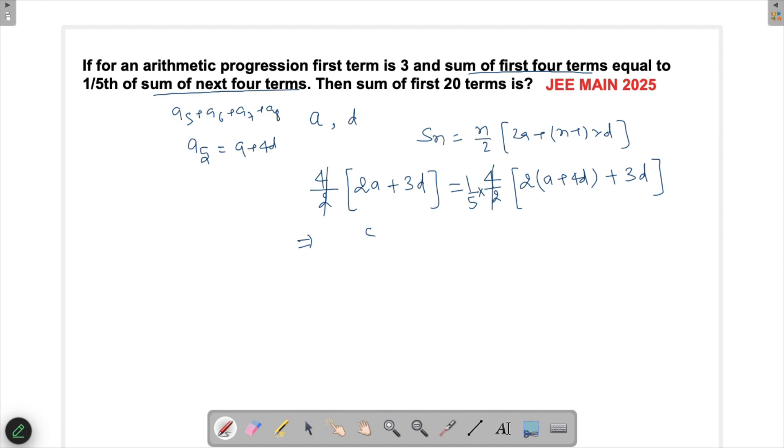This becomes 10a + 15d = 2a + 8d + 3d, which is 10a + 15d = 2a + 11d.